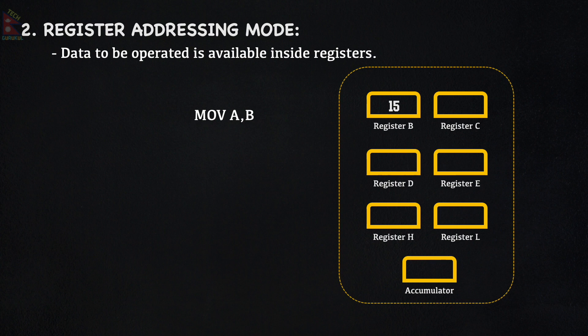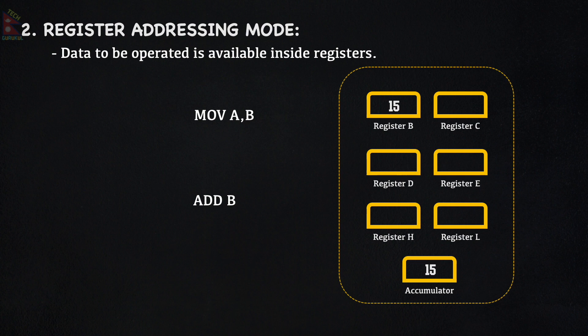For Register Addressing Mode, consider the instruction MOV A, B. When we execute MOV A, B, the content of register B is copied into the accumulator. For example, if register B contains 15, then the accumulator gets 15. For ADD B, the content of register B is added to the accumulator, giving a final result of 30.